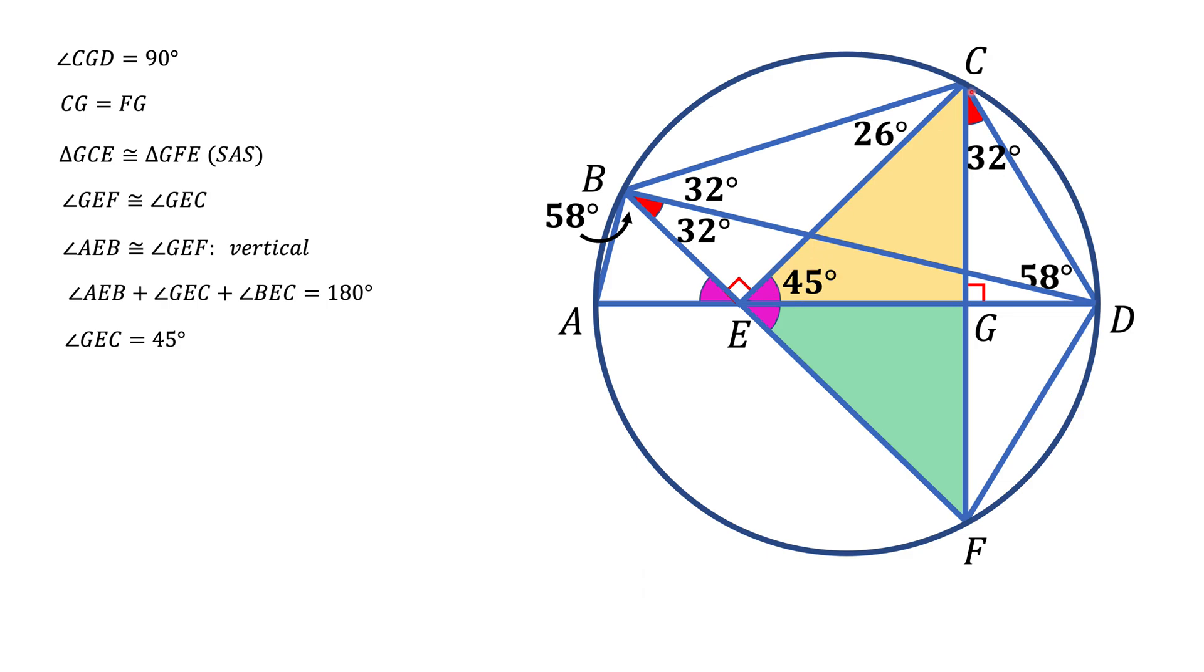Now if you look at the yellow triangle, one angle is 45 degrees, another is 90 degrees, so the third angle is 45 degrees. We're pretty much done. Notice that angle X is the sum of the 45-degree angle and the 32-degree angle, which gives us 77 degrees as the final answer.